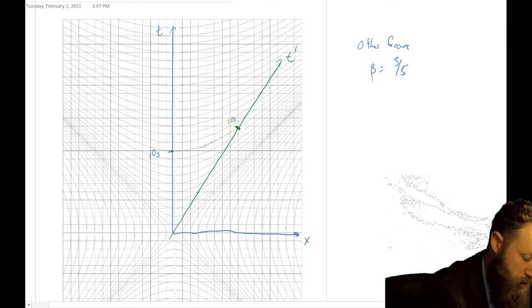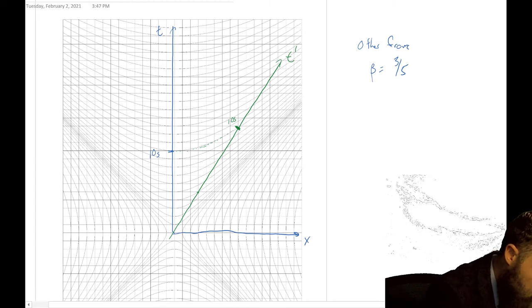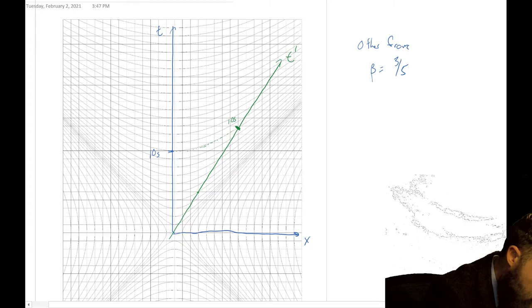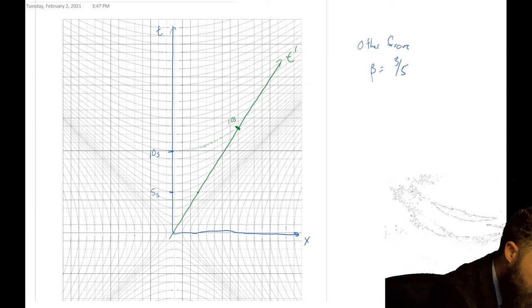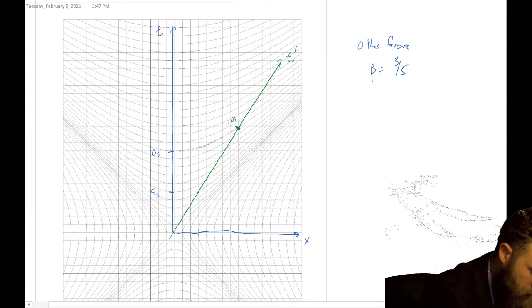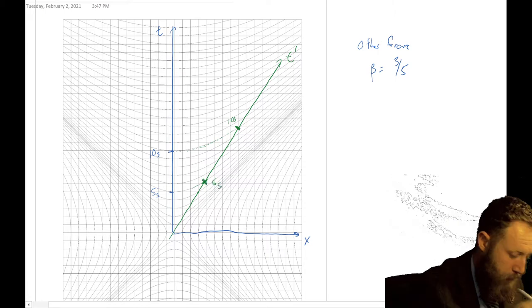Let's do it with one more, just so we make sure we get it. So let's do five. There's the five second mark. And if we follow the hyperbola for this one, and there is our five second mark. Now let's do it perpendicular. There is our five second mark.